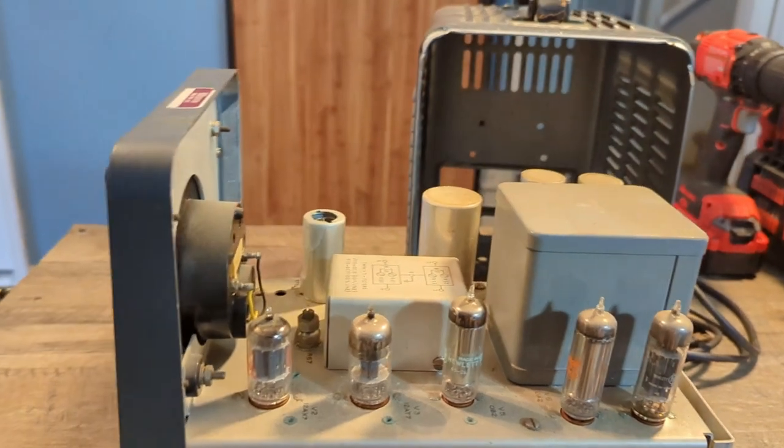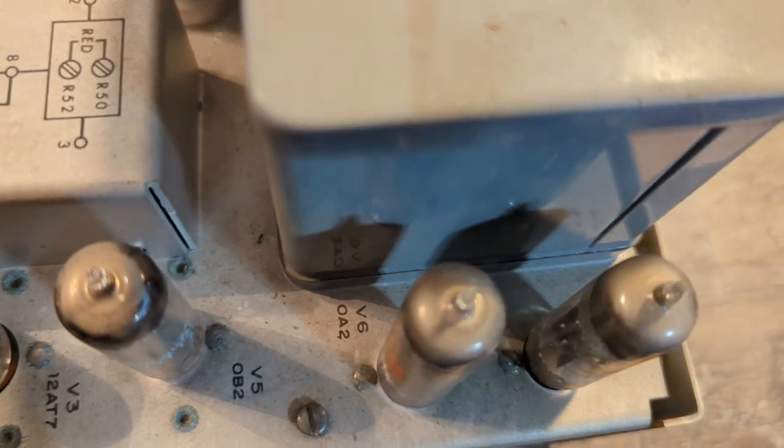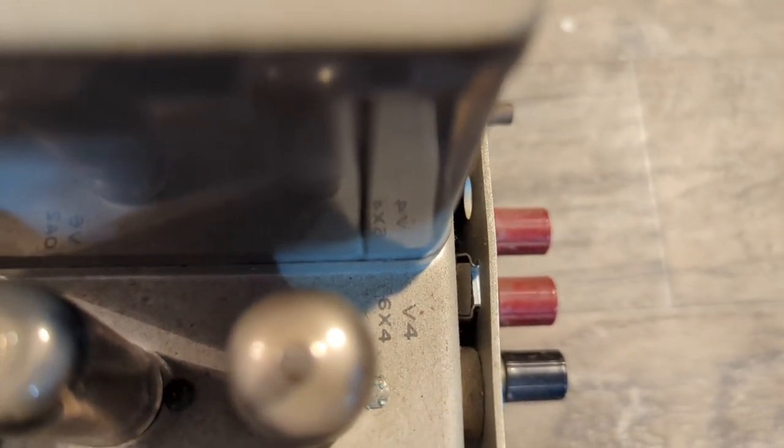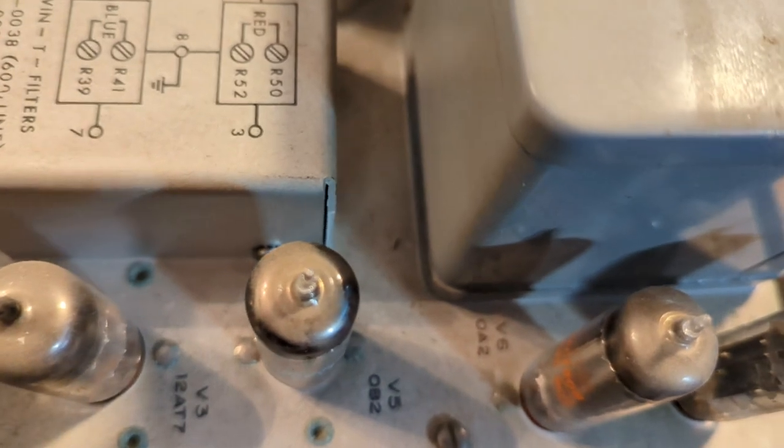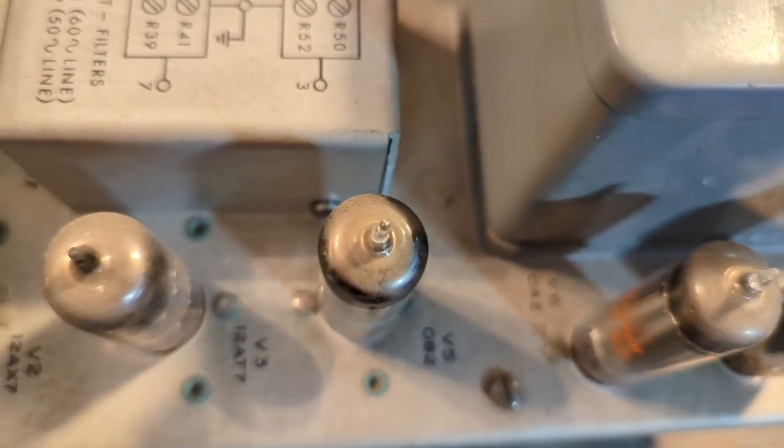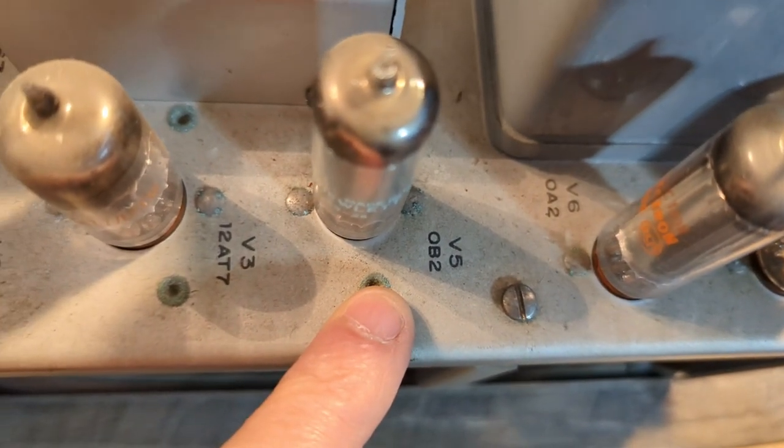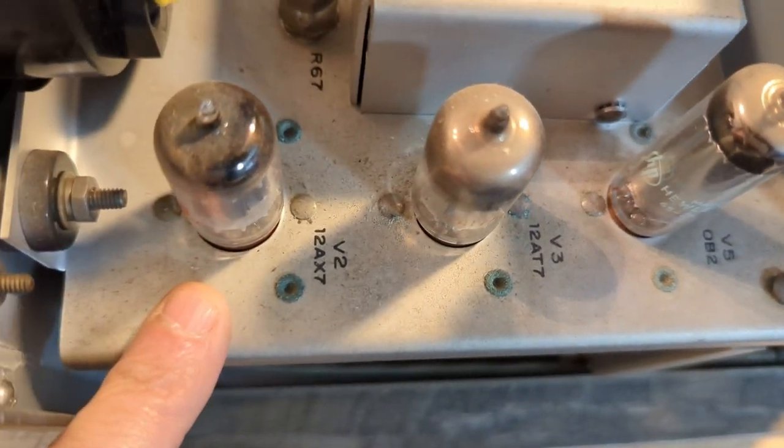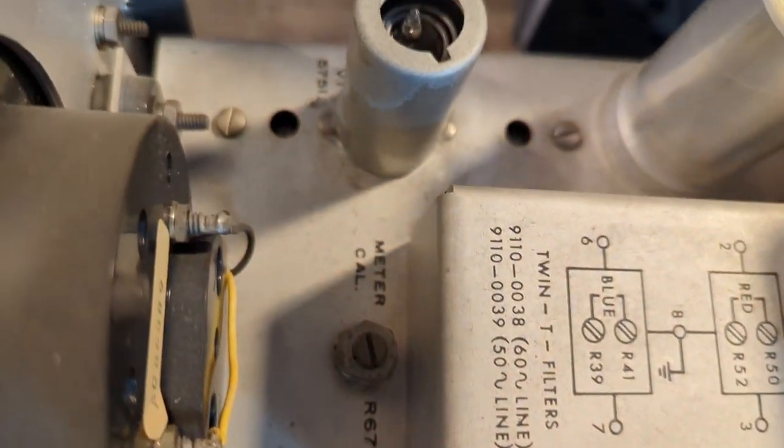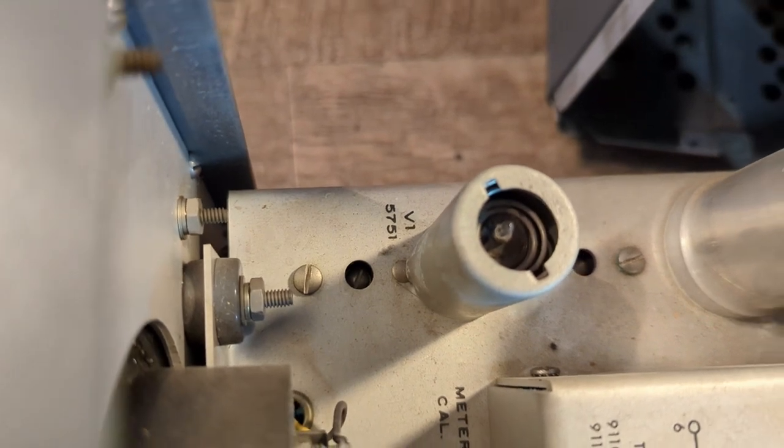Alright, so you can see we have a lot of tubes. There is a 6X4, which I think is a rectifier tube. There is an OA2, I believe that's some kind of a regulator, and an OB2, probably another regulator tube. There is a 12AT7 and a 12AX7 - both of these I believe are for the amplifier circuit. And this is probably our first stage, the 5751, that's right at the input section.